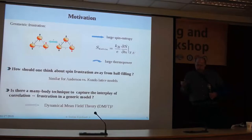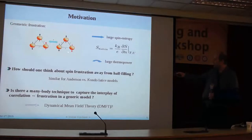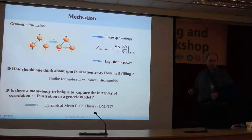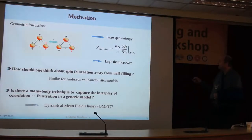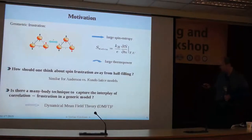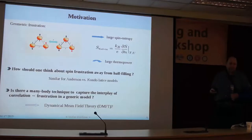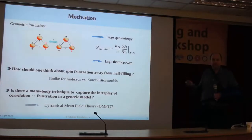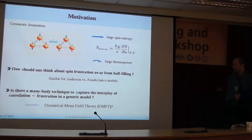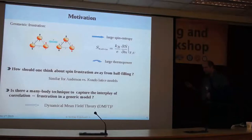You have seen this sketch for geometric frustration, where Ising spins live on a triangular lattice. Naively, you would expect that the large thermopower seen in cobaltates comes from frustration, because the system has a large spin entropy, and the thermopower is a derivative of the entropy, giving a large thermopower from the spin. But if you slightly go away from half-filling in the Hubbard model, you don't have localized spins — you have itinerant electrons.